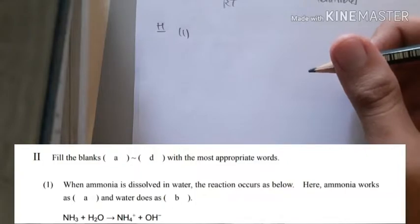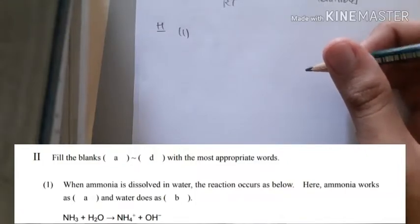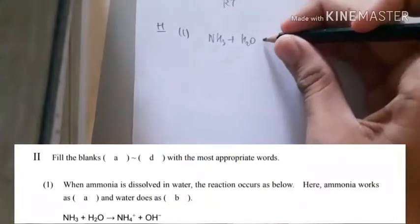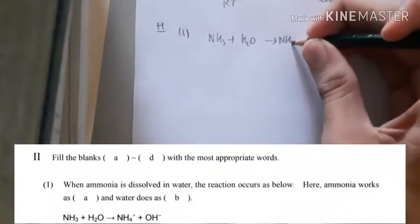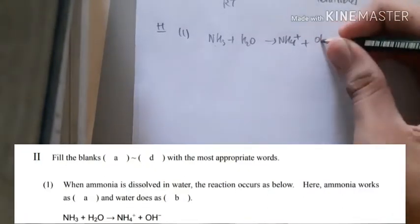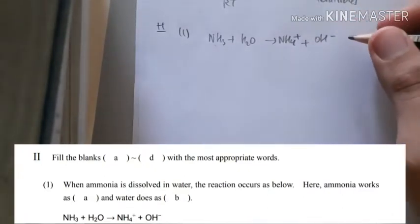They say that when ammonia is dissolved in water, the reaction occurs as below. So you see that there are ammonia, water, will result into ammonium ion and hydroxide ion.